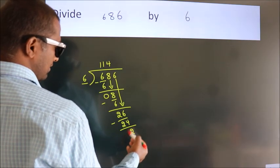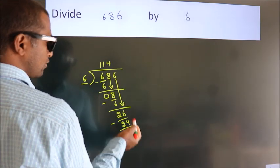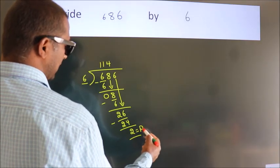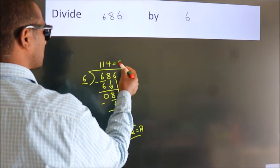After this, no more numbers to bring it down. So we stop here. This is our remainder. This is our quotient.